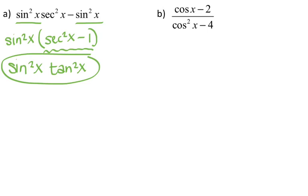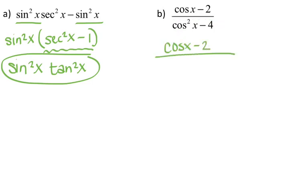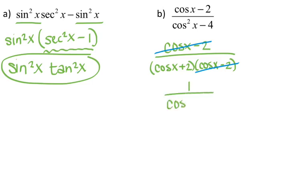For the next problem, we have cosine of x minus 2 over cosine squared of x minus 4. The denominator is factorable — it's a difference of squares. So we have cosine of x minus 2, over cosine of x plus 2 times cosine of x minus 2. The cosine of x minus 2 on top and bottom cancel, leaving 1 over cosine of x plus 2, which can't be simplified further.